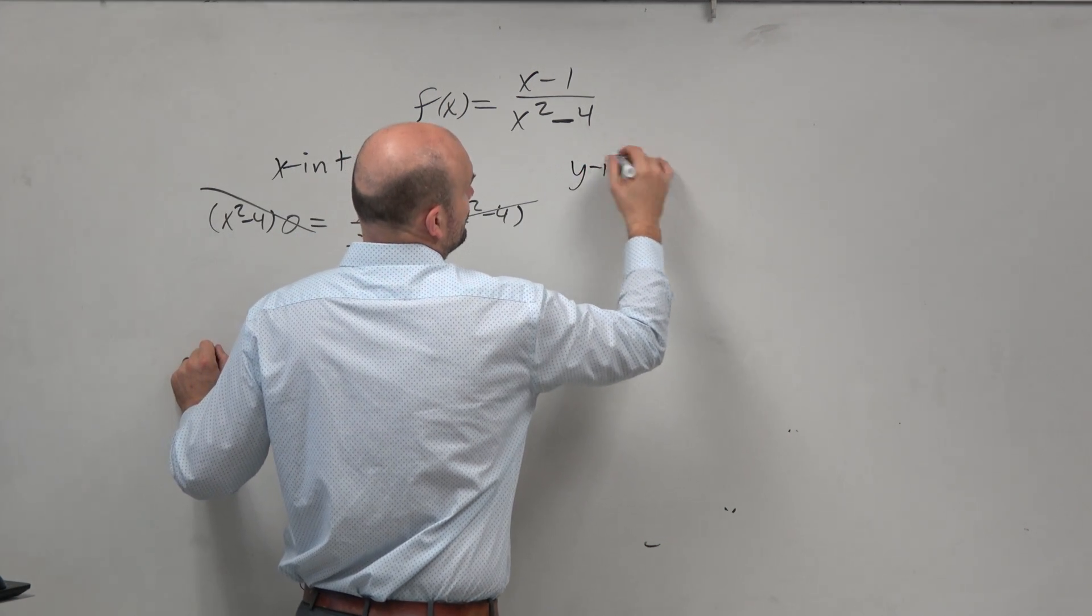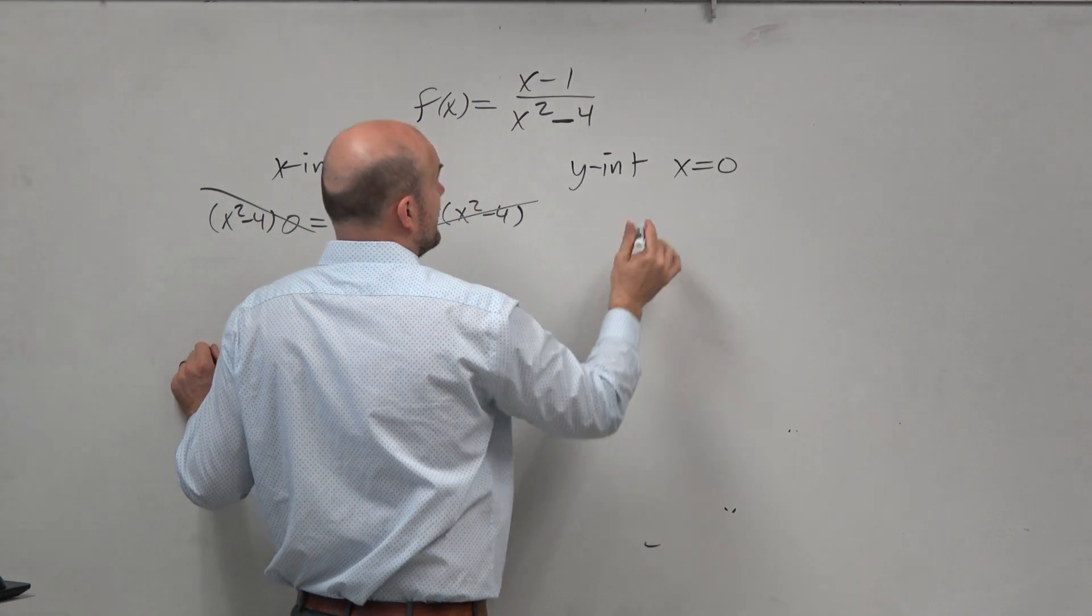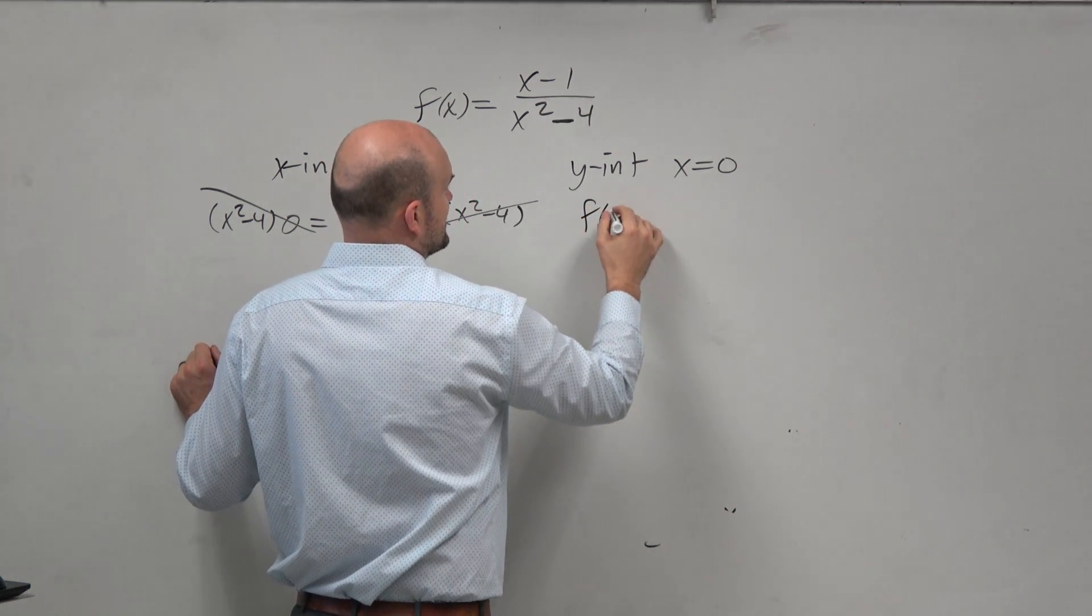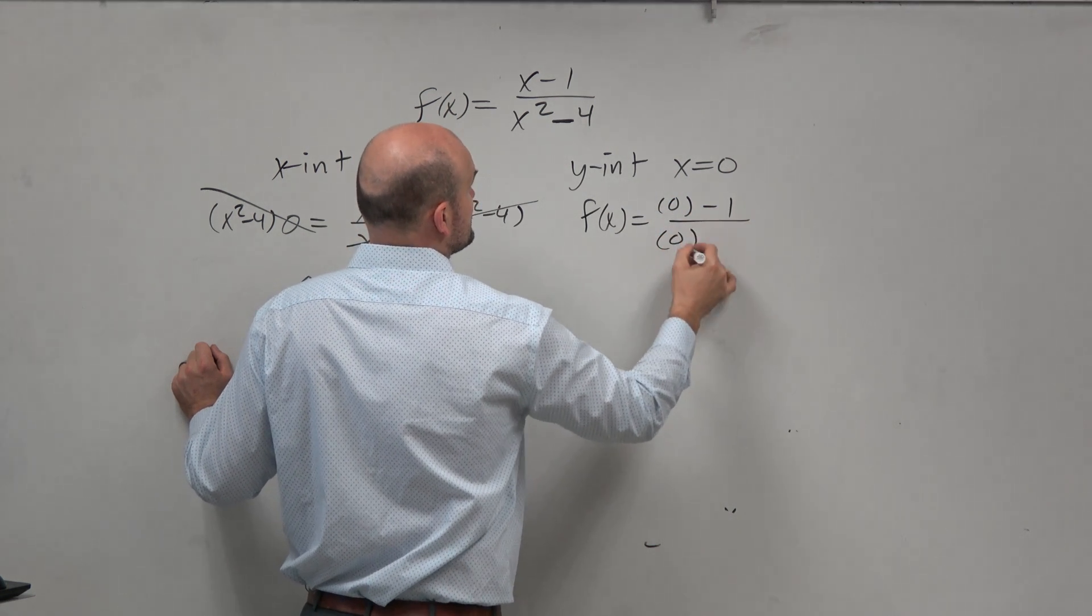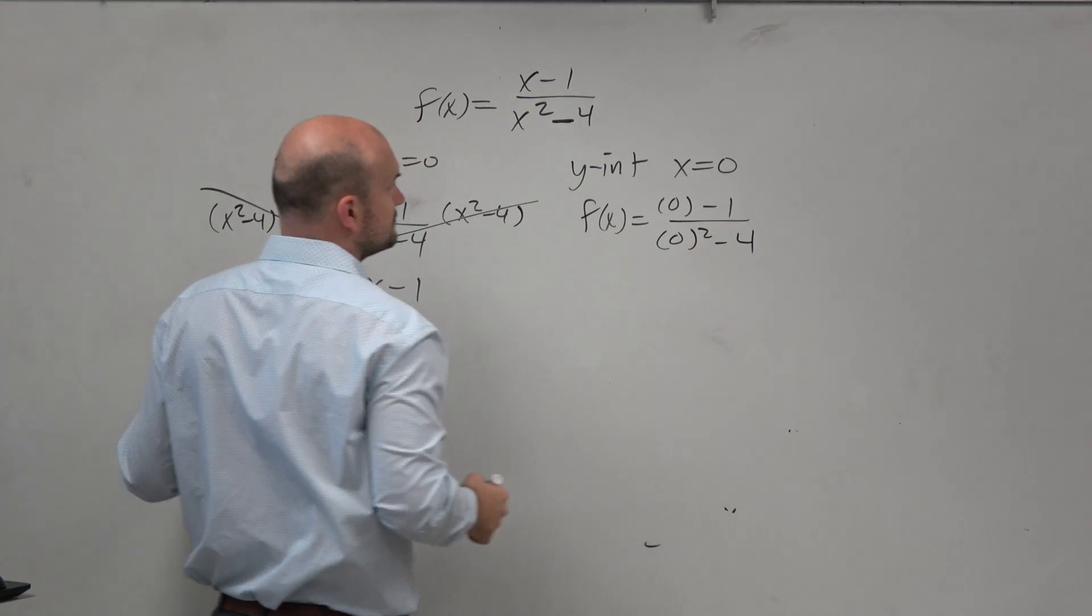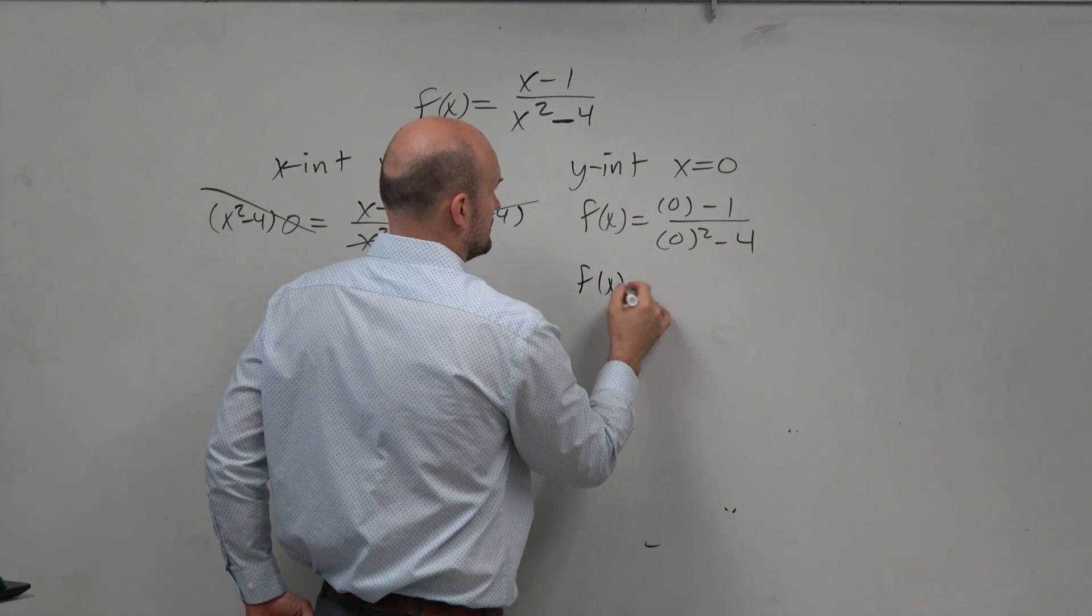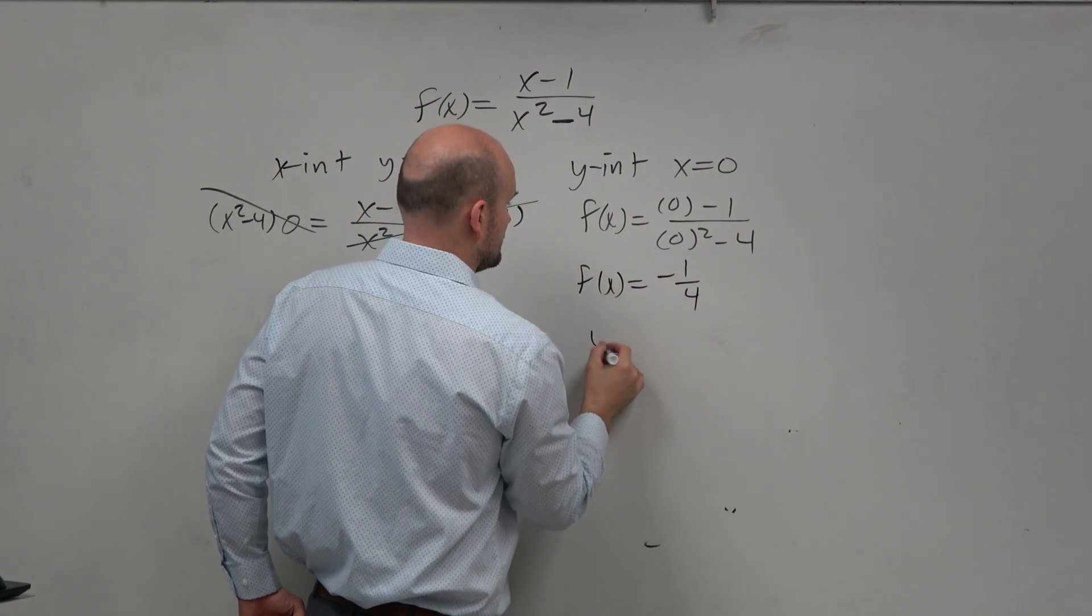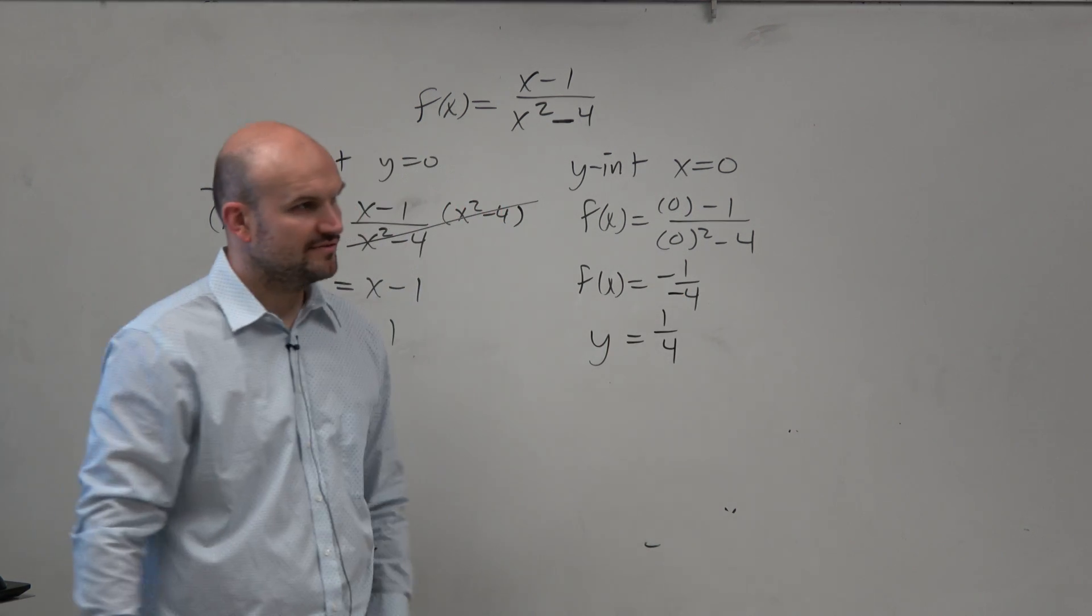For the y-intercepts, we have been taught x has to equal 0. And to put x equals 0, we'll just have f of x equals 0 minus 1 over 0 squared minus 4. Well, that simplifies to negative 1 fourth. And therefore, we can say the y-intercept is negative 1 fourth.